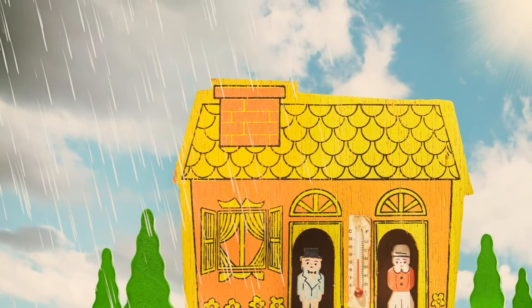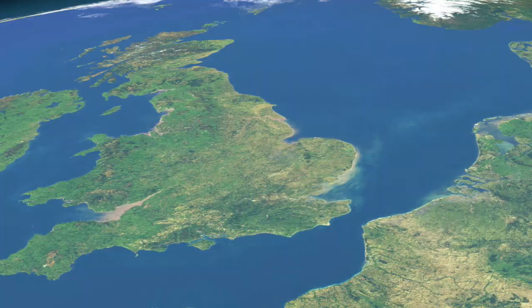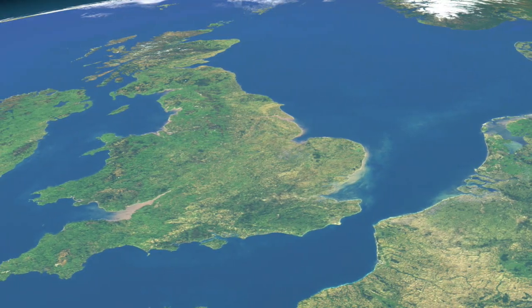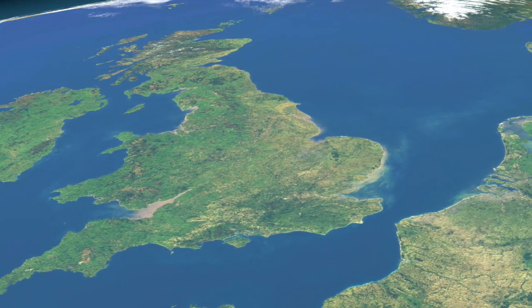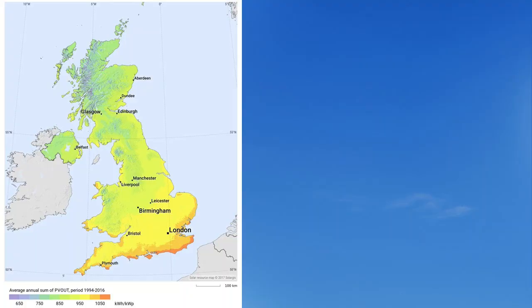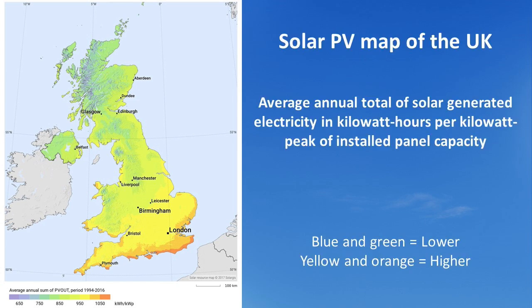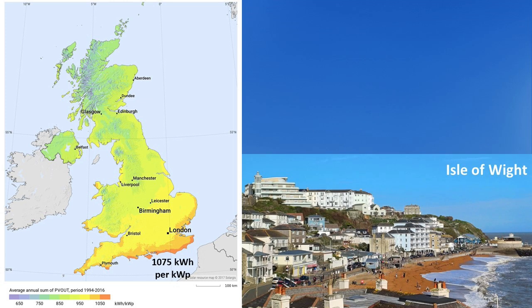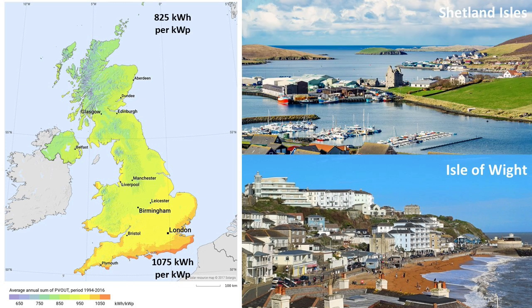Whilst we cannot control how much the sun shines, the location of your home could have a significant impact. Different parts of the country get different amounts of sunlight, which will affect how much electricity your solar panels can generate. For example, a solar PV system in the south of the UK might typically generate around 30% more than an identical one in the Shetland Islands.